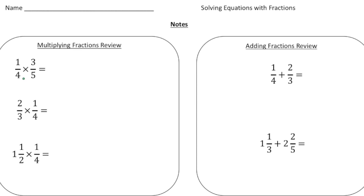So the first one, we have one-fourth times three-fifths. Remember, multiplying fractions is the easiest of all the operations. All you do is you multiply the numerators, so it's going to be one times three, and you put it over the product of the denominators, so four times five. One times three is three, and four times five is twenty, so it equals three-twentieths.